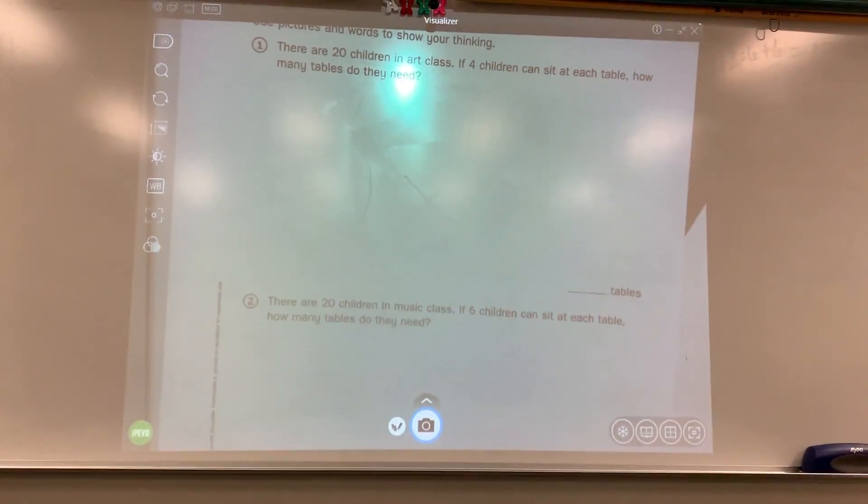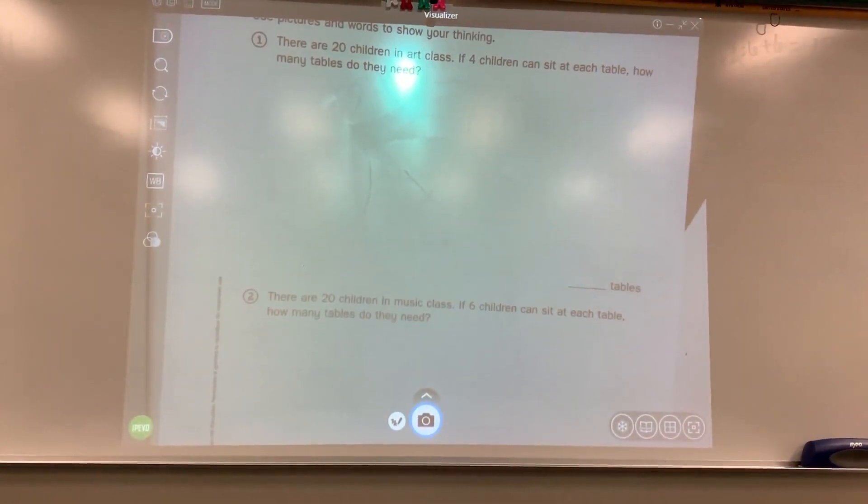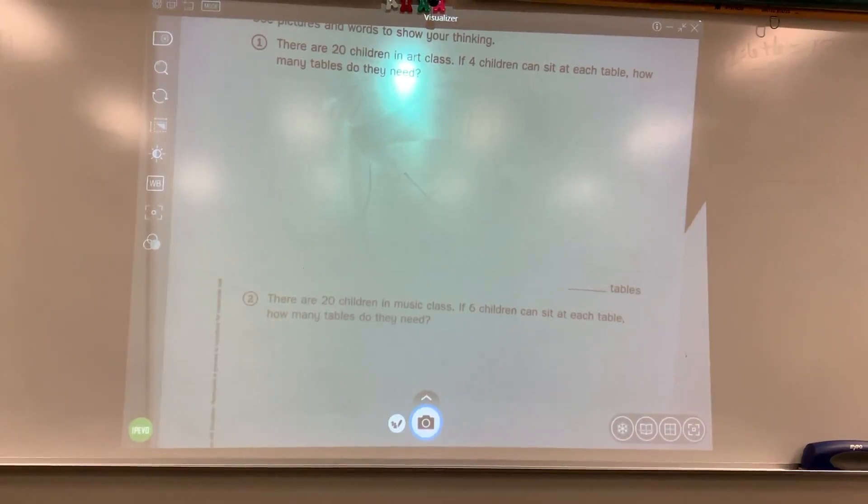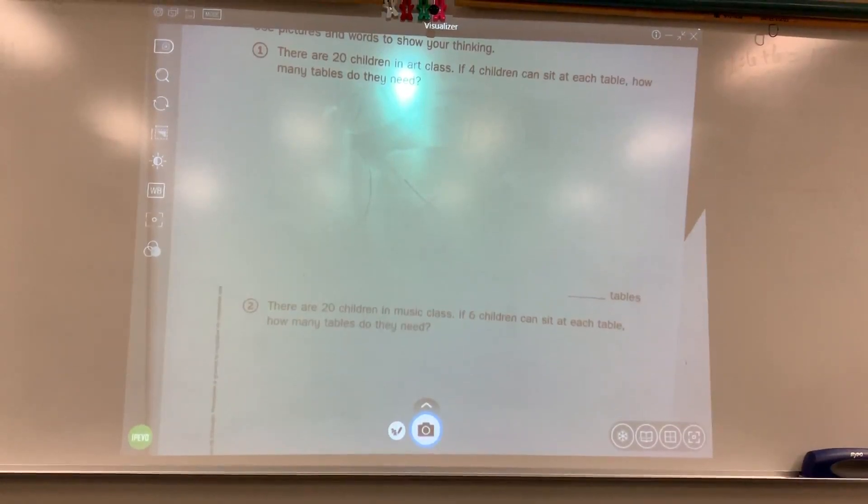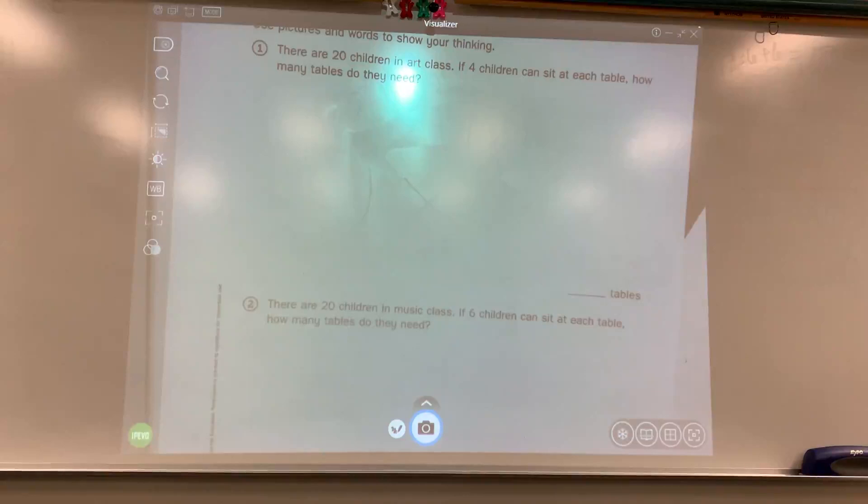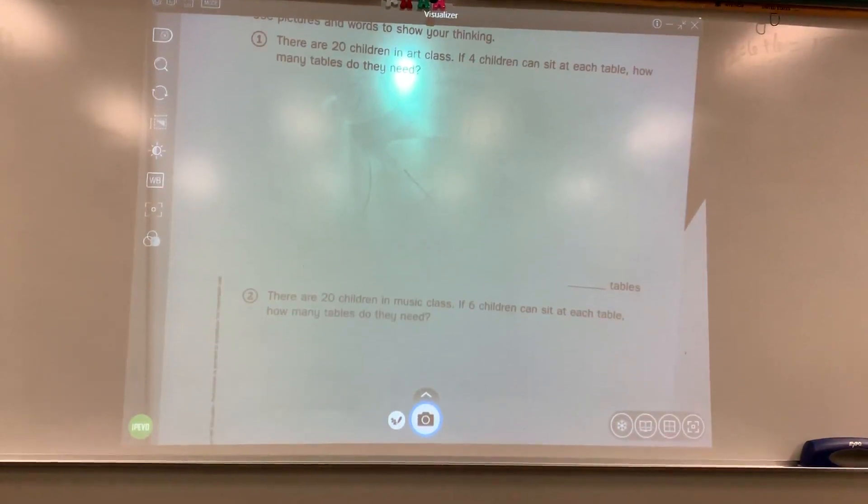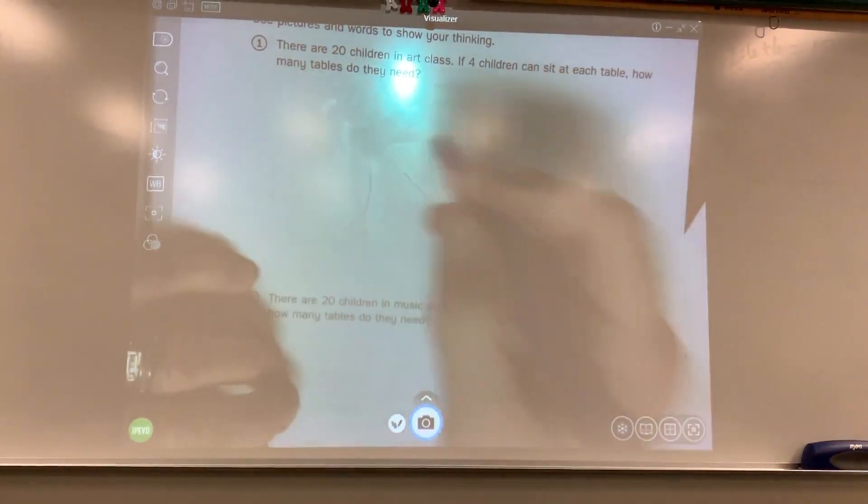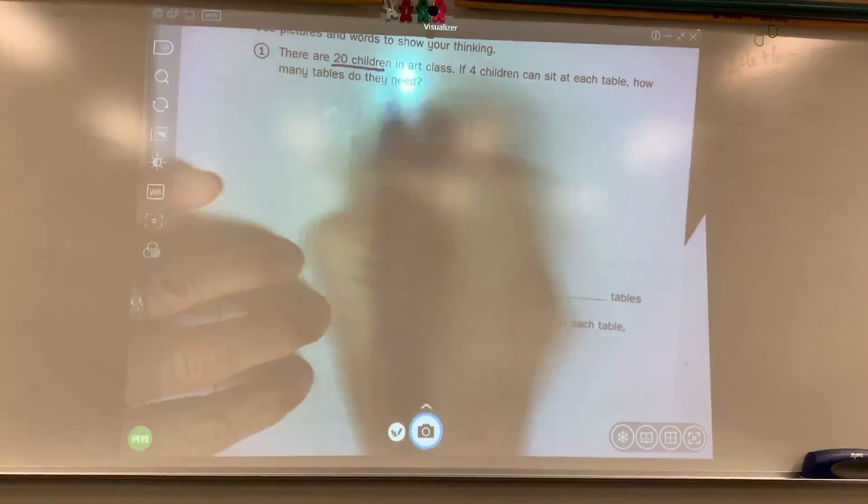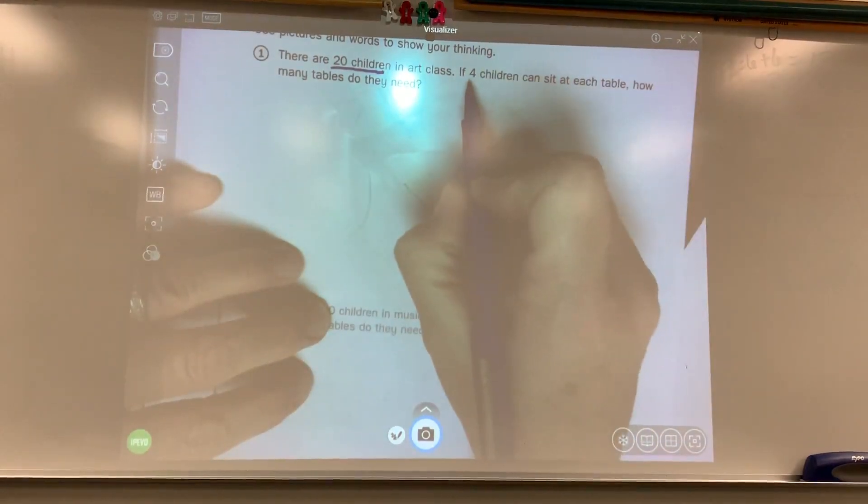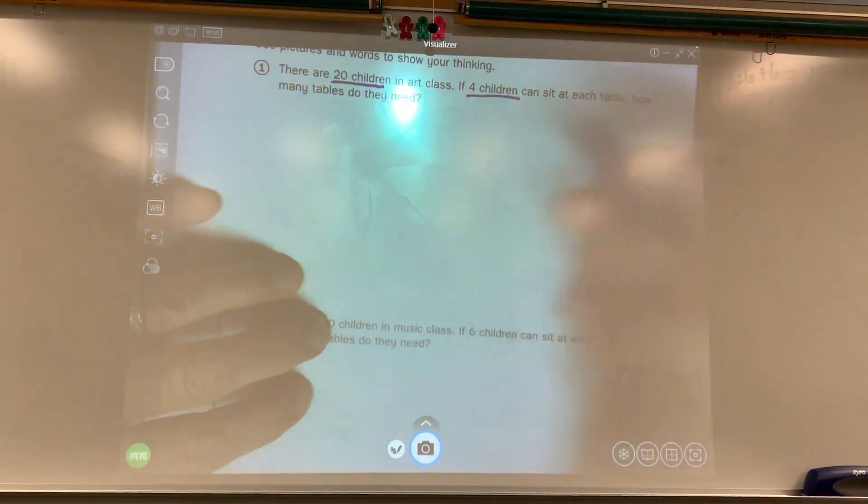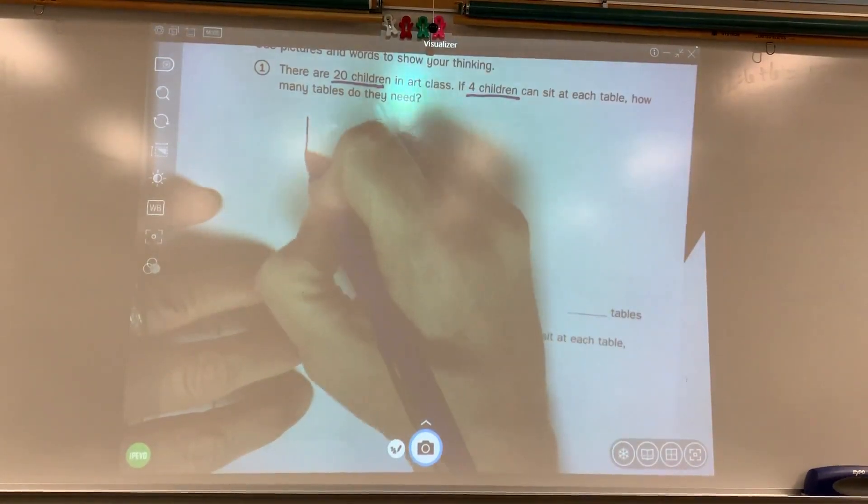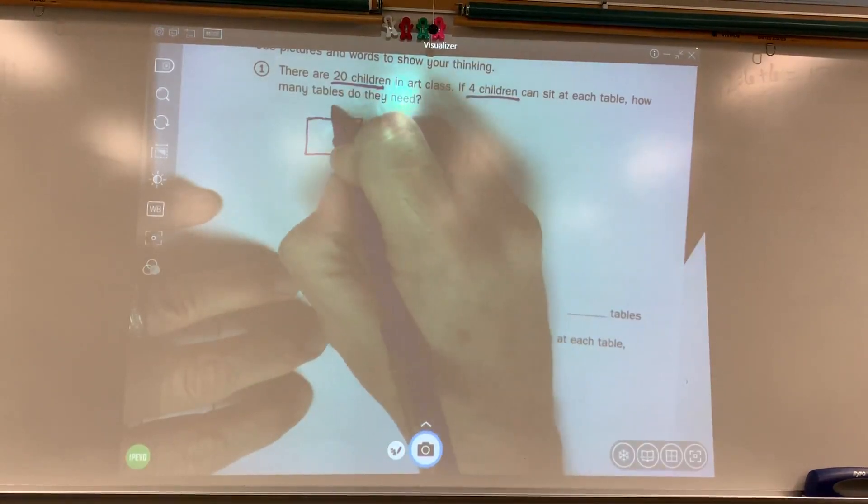Yesterday we made arrays where we knew how many rows and how many columns and we had to find the main answer. Today we're going to do the opposite. We start with our main answer or how many total and then we have to divide them into the rows and the columns. So we are starting with 20 children. Each table can hold four children.